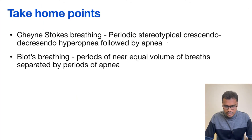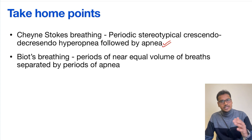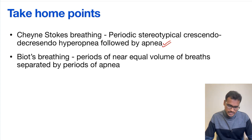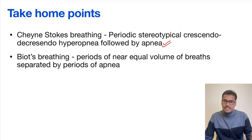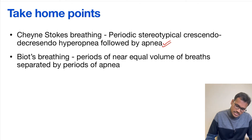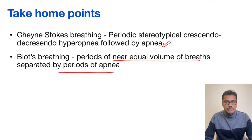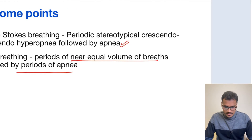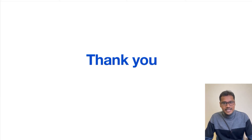The take-home points: Cheyne-Stokes breathing is a periodic, stereotypical crescendo-decrescendo pattern followed by apnea. There is a hyperpneic period where the tidal volume increases and falls down, followed by an apnea. Whereas in Biot's breathing, these are nearly equal breaths separated by periods of apnea. Thank you for listening; we will see you in the next video.